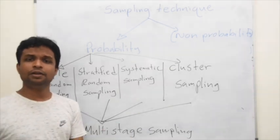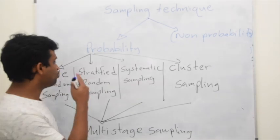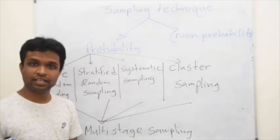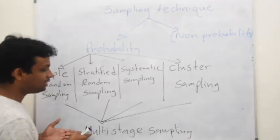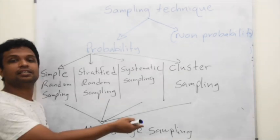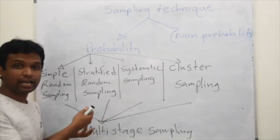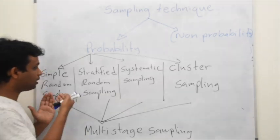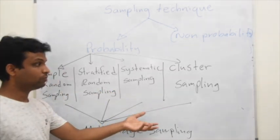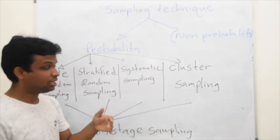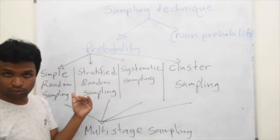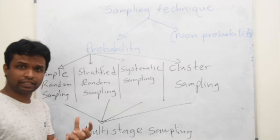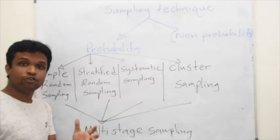But in most of the time, in practical situations, only one sampling technique may not be enough. In such cases, we go for multi-stage sampling. In multi-stage sampling, we can have several stages. In those stages, we can have a combination of these techniques or cluster sampling two times, stratified random sampling two times. Like that, we can have a combination or individual sampling techniques, but more than one stage.